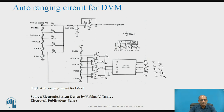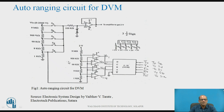Now, the auto-ranging circuit for DVM. Using a manual selector switch, you have to change or select the appropriate switch depending on the magnitude of input — that is a manual range selector. If you want an auto-ranging facility for your DVM, this selection of switches is to be done automatically by monitoring the input voltage. In this circuit, the attenuator is provided by connecting resistances of 9 Mohm, 900K, 90K, 9K, and 1K as shown. The switches are SA, SB, SC, SD, and SE, and these are solid-state switches.